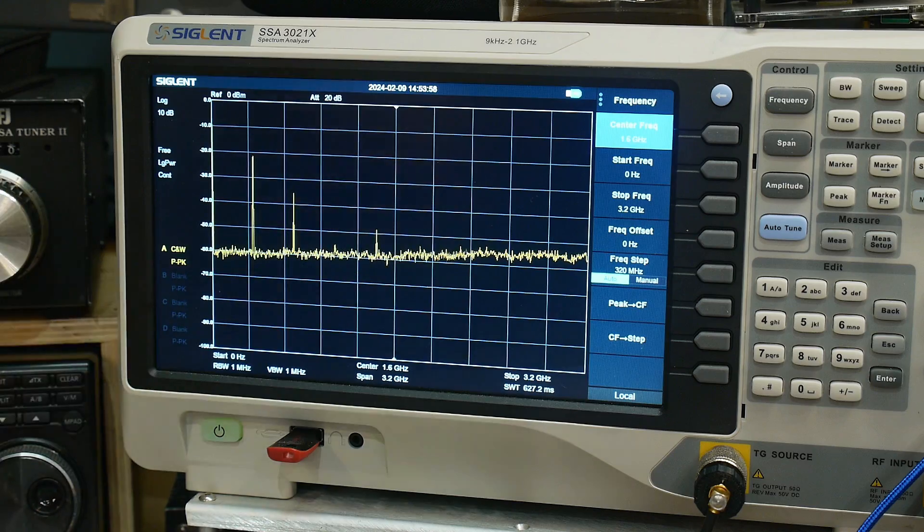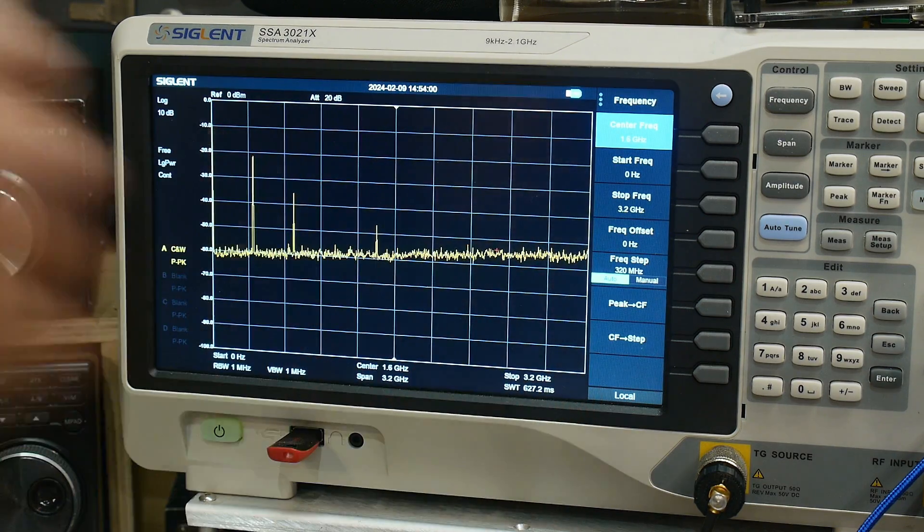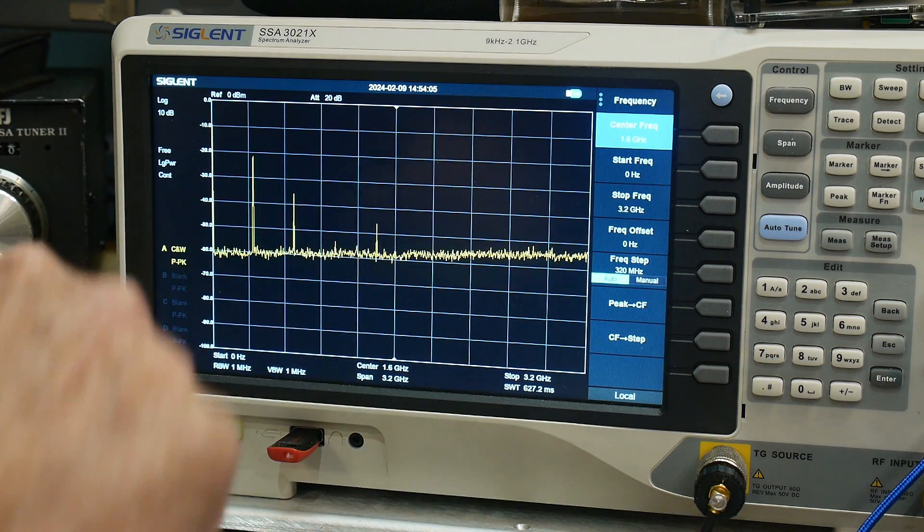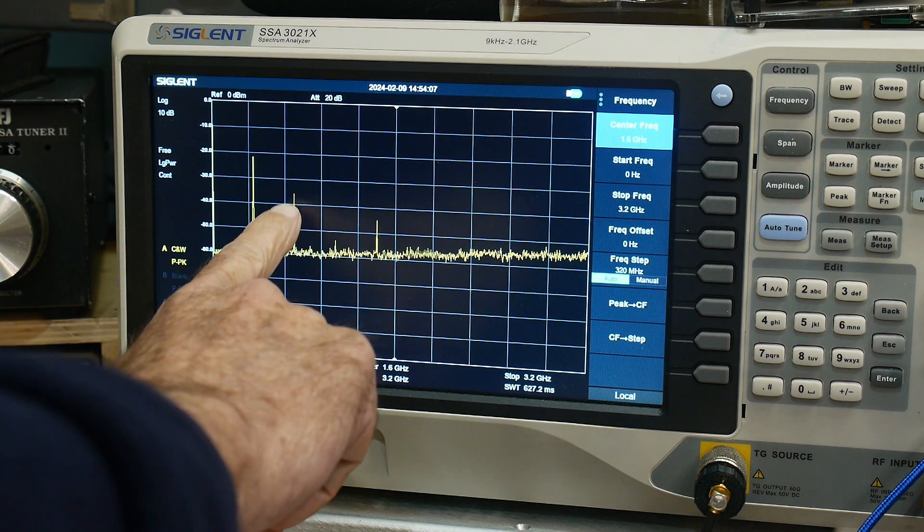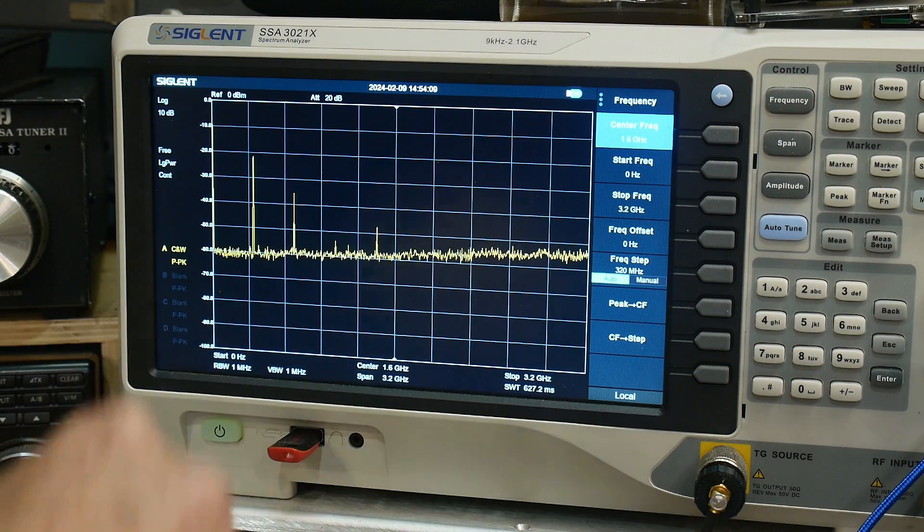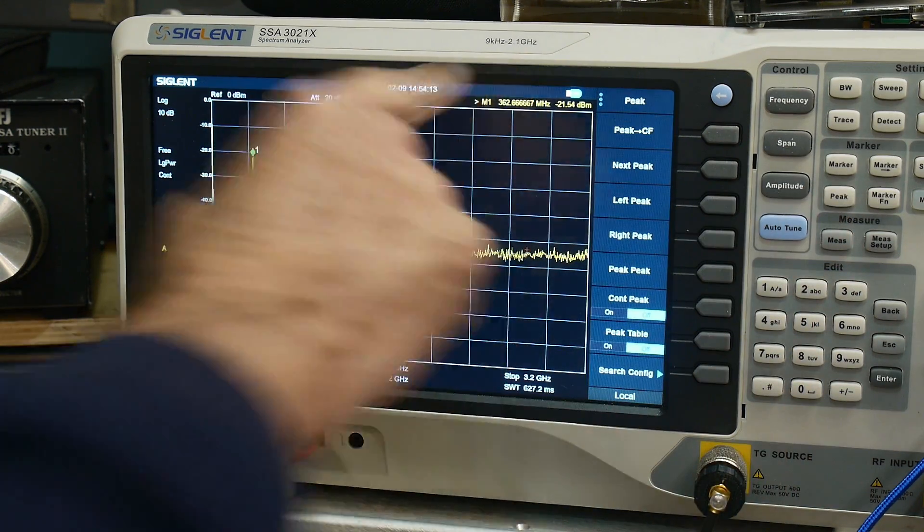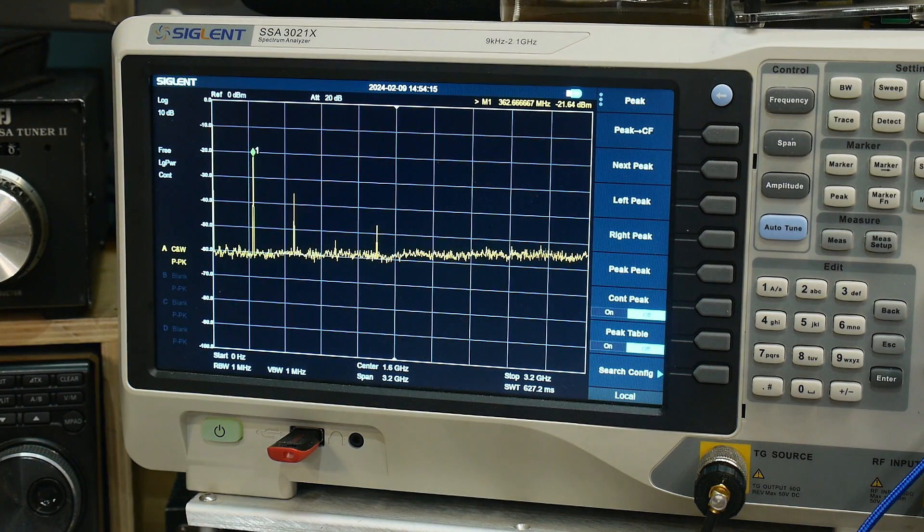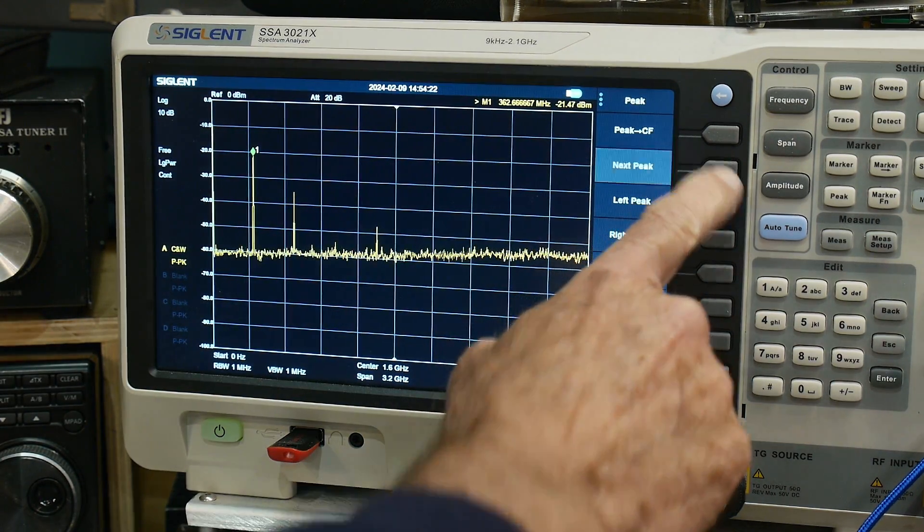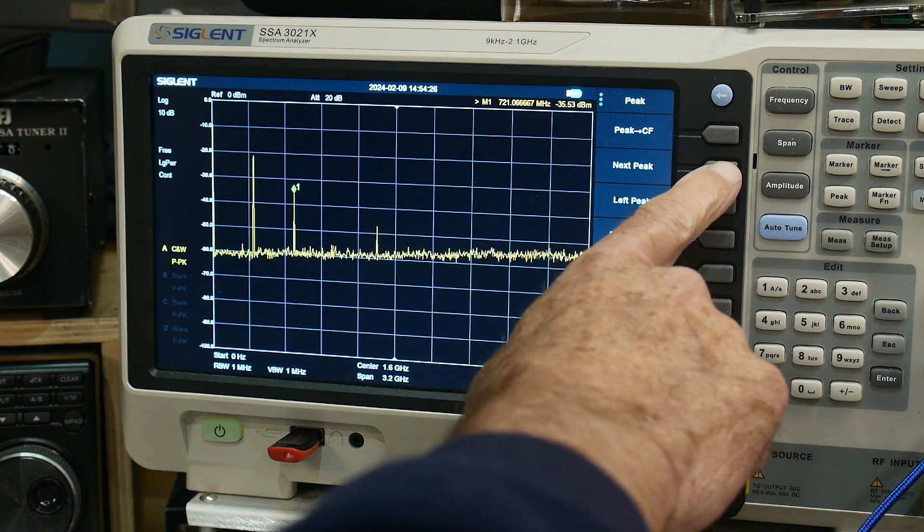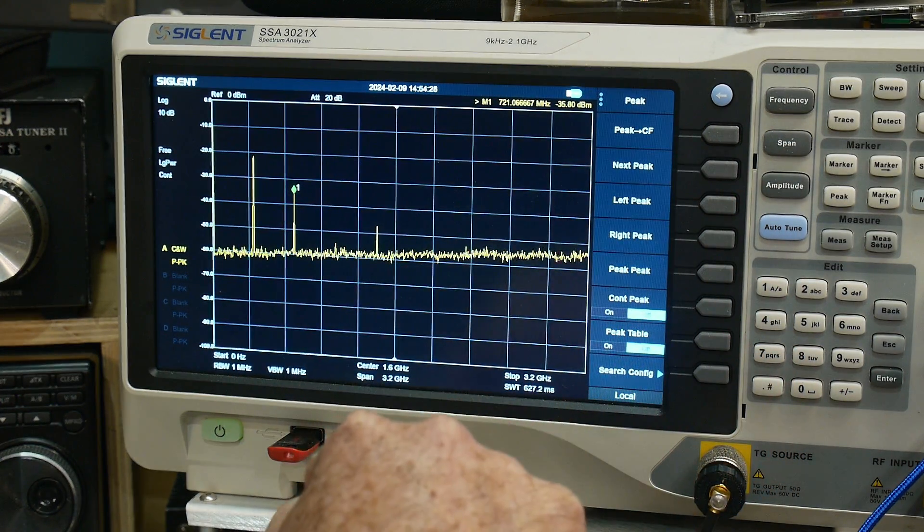So we have, this is from zero to three gigahertz. And so we're getting a couple spurs here, a main, second harmonic, third harmonic, fourth harmonic. And so we can do a peak on that. And we are oscillating at 362 megahertz. The next peak is at 721 megahertz.